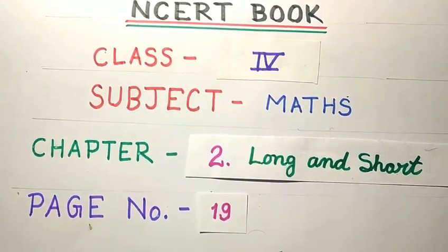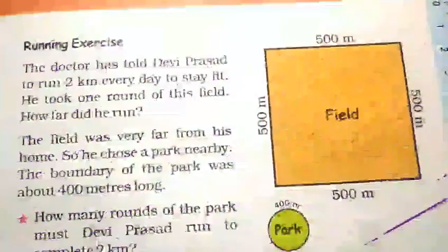Hello students, how are you? I think all of you will be fine. So in this video we are going to learn about our NCERT book, Class 4, subject Math, Chapter 2 Long and Short, page number 19. If you did not see the previous video of this lesson, then you should go to the description of this video and follow the link. This is page number 19 of this book, so let's start this video.